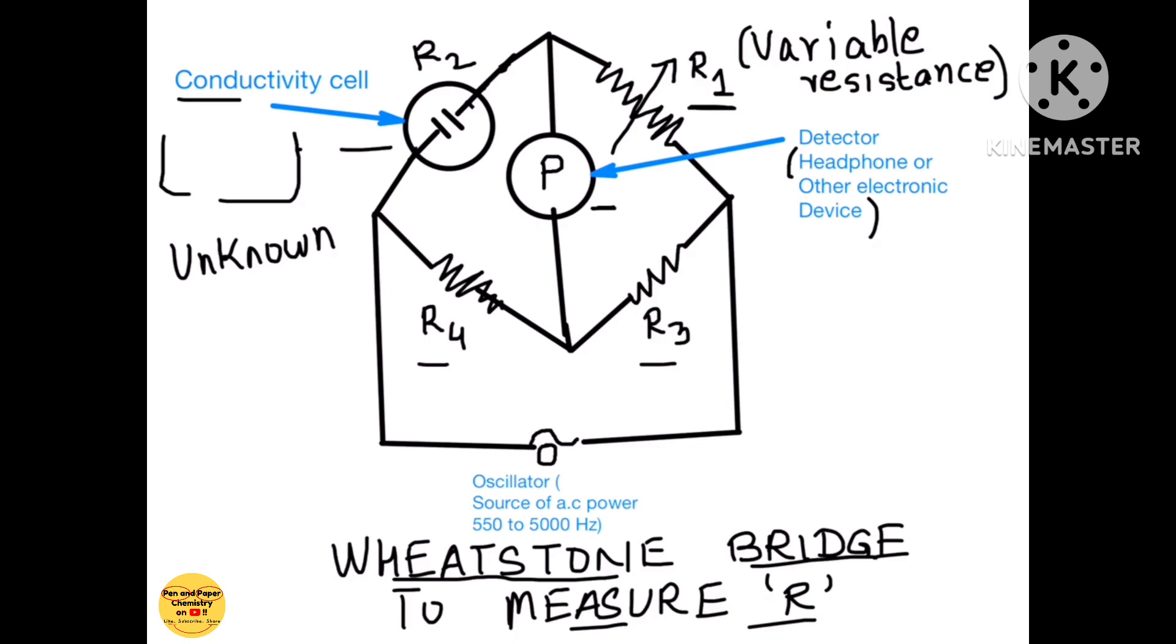And how do we do that? We have simply R1 by R2 is equals to R3 by R4, that is when we say that this bridge is balanced. And what do we have to determine in this? The only unknown value over here is R2. Now a doubt arises.